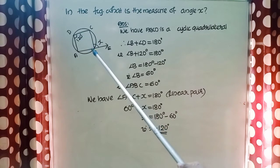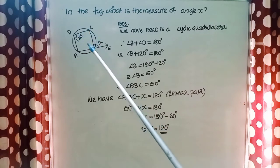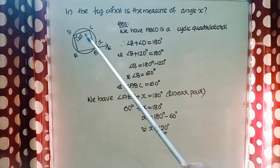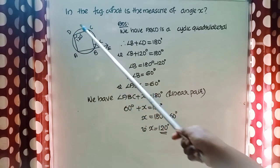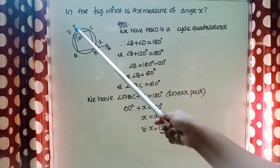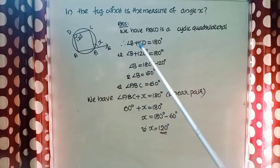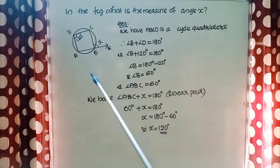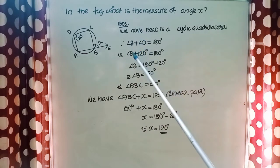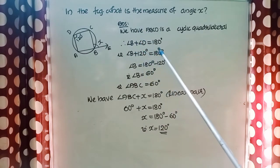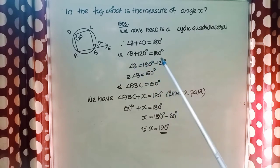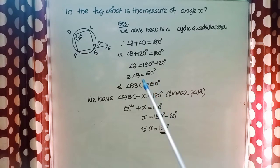We know the opposite angles of a cyclic quadrilateral are supplementary, meaning their sum equals 180 degrees. So we can say angle B plus angle D equals 180 degrees. The measure of angle D is given as 120 degrees. So angle B plus 120 degrees equals 180 degrees, giving us angle B equal to 60 degrees.